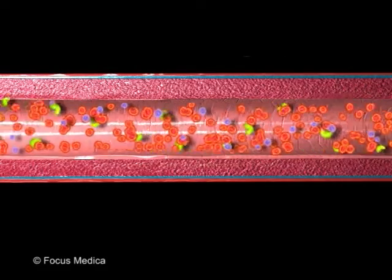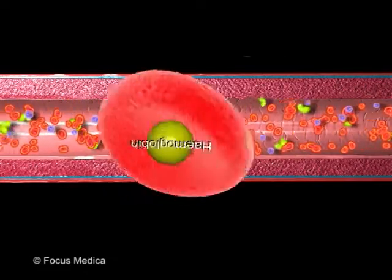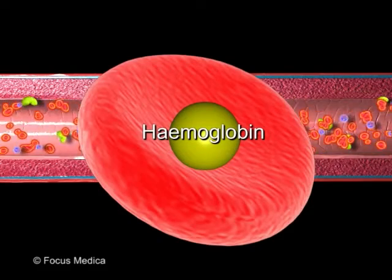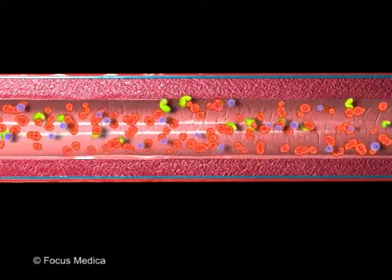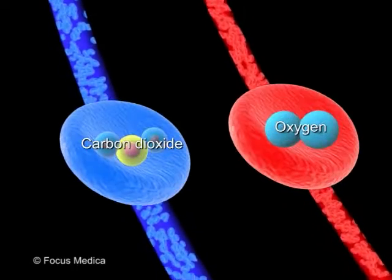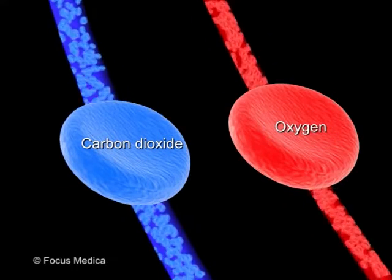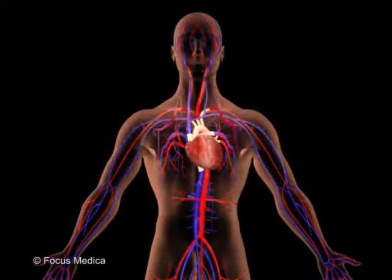Red blood cells, or erythrocytes, are biconcave disc-shaped cells that contain hemoglobin, responsible for transporting oxygen to and carbon dioxide away from all parts of the body.